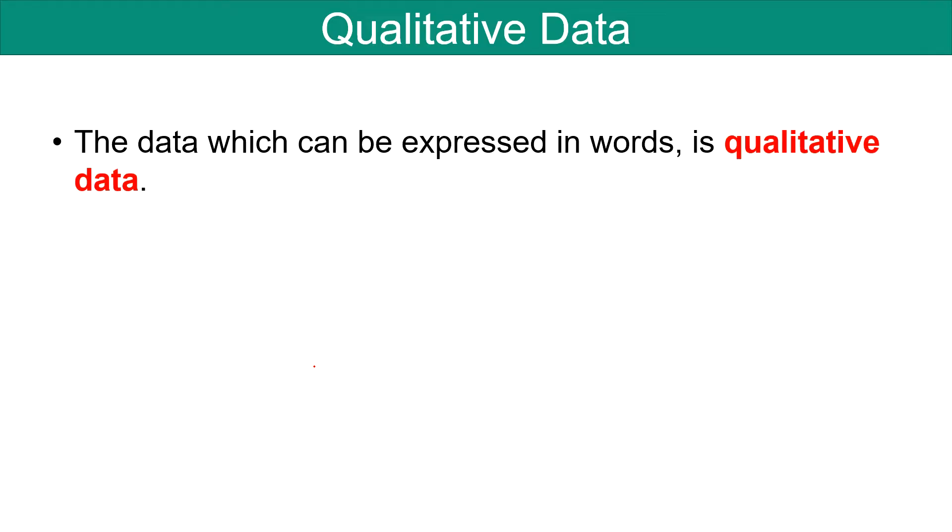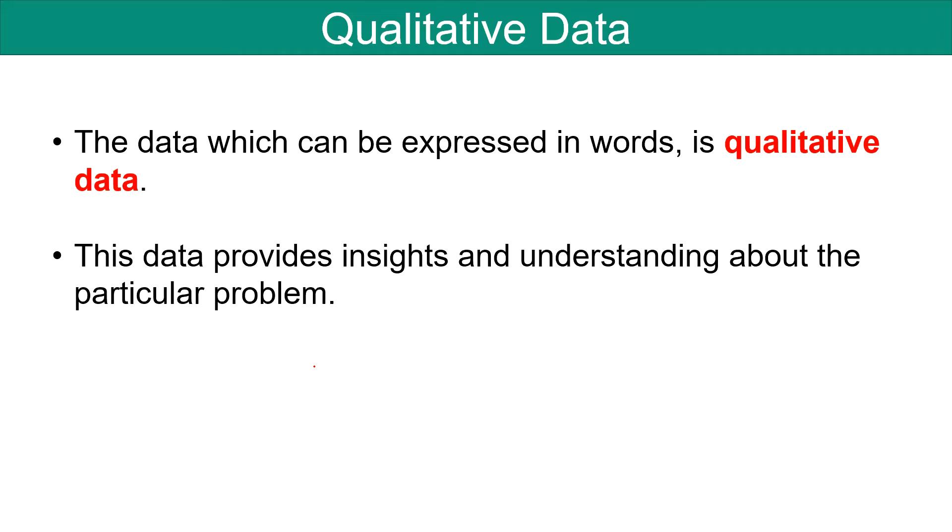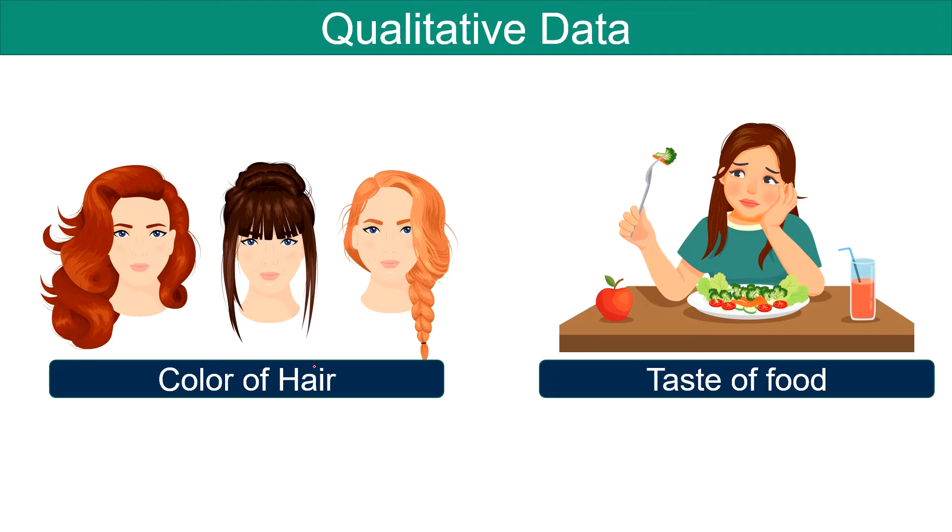In other words, the data which can be expressed in words is qualitative data. This data provides insights and understanding about the particular problem. Alternatively, it is known as Categorical Data. For example, color of hair, taste of food, etc.